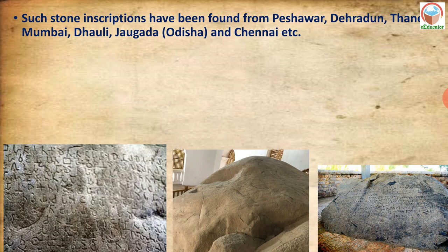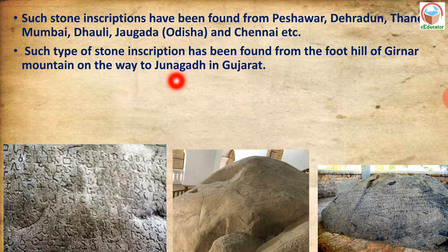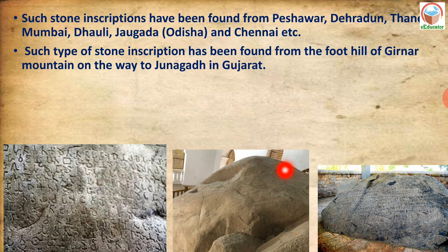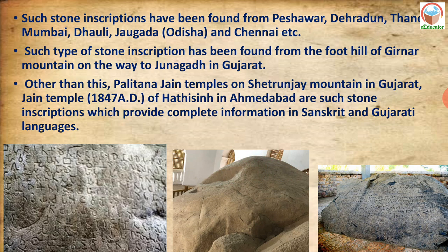Stone inscriptions have been found from Peshawar, Dehradun, Thane, Mumbai, Dhulia, Joghara, Odisha and Chennai. A particularly notable stone inscription has been found at the foothill of Girnar mountain on the way to Junagadh, Gujarat. Another specimen of stone inscriptions has been found at Palitana, near Jain temples at Shatrunjaya mountains in Gujarat.